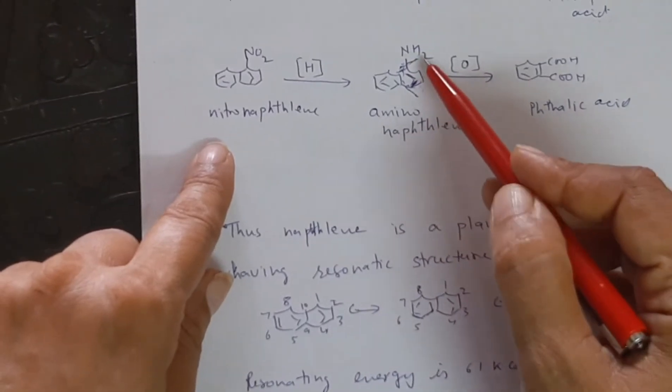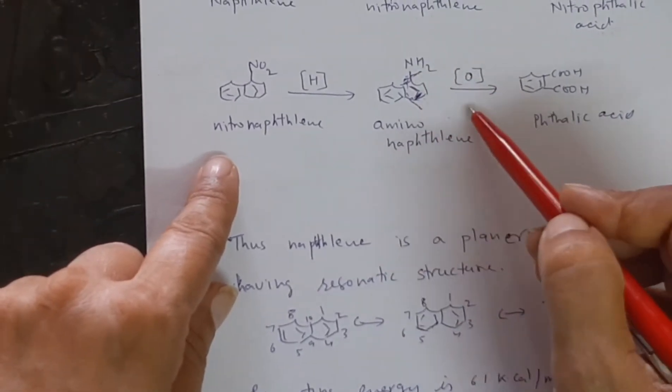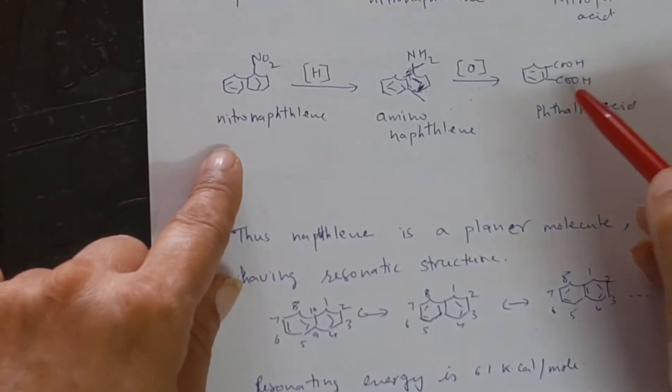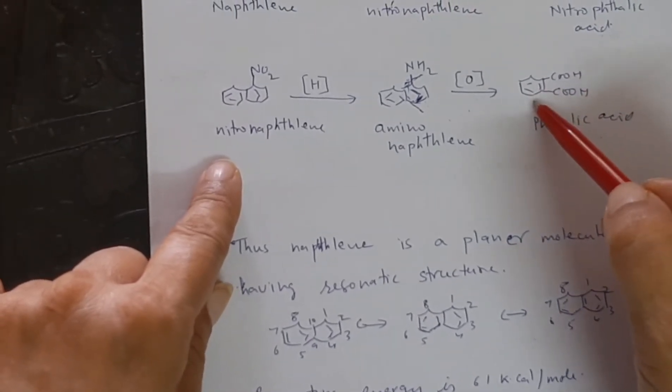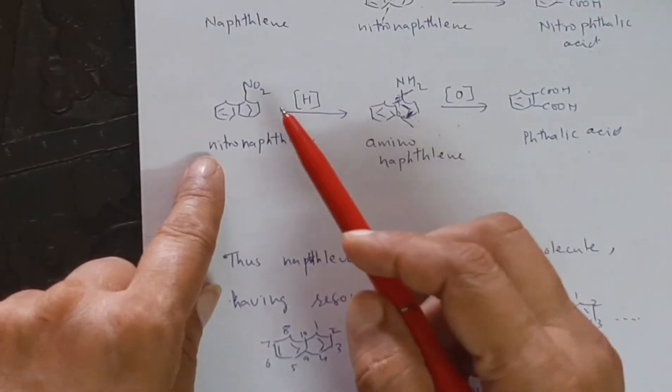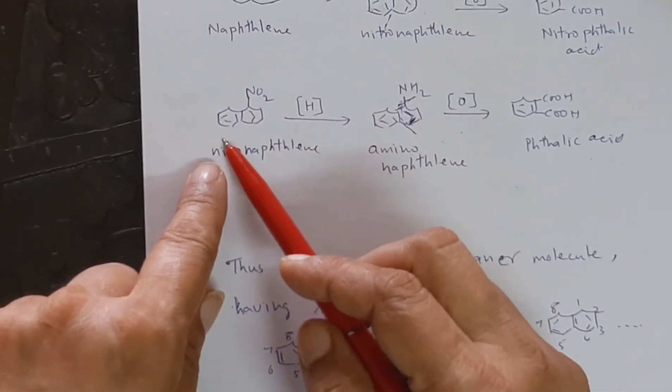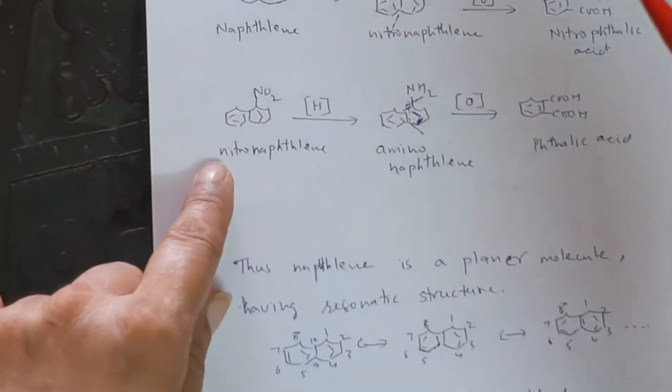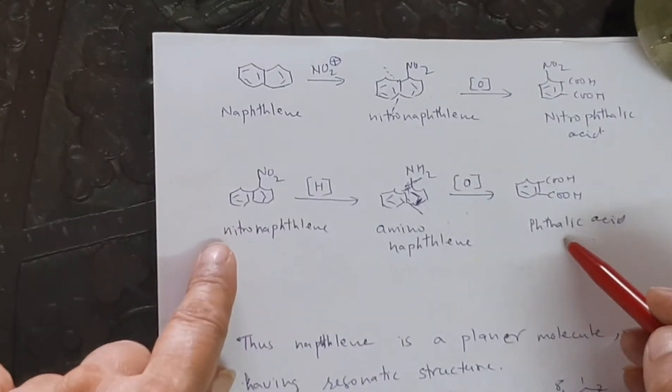So now if we oxidize this aminonaphthalene, it gives phthalic acid. This shows that the ring which is not having nitro group is also aromatic. It means both the rings of naphthalene, 1 and 2, both are aromatic in character.